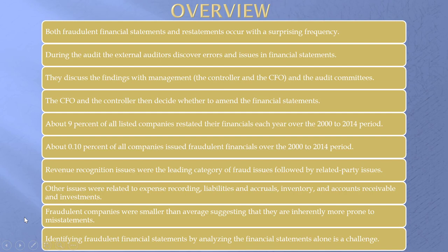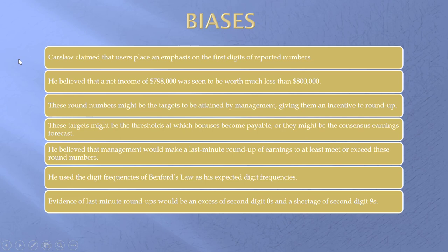The fraudulent companies were smaller than average. Identifying fraudulent financial statements by analyzing the numbers alone is a challenge. Way back in the 80s, Caroslo from New Zealand claimed that users place more emphasis on the first digits. He believed that a net income of $798,000 was seen to be worth much less than $800,000, even though in percentage terms it was only a little bit less.